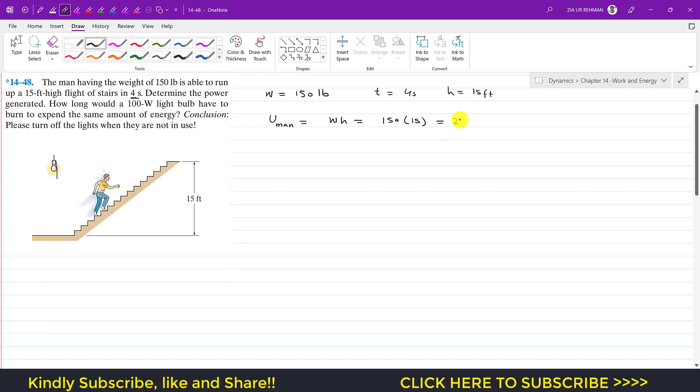So this is 2250 pound-feet, this is the work done by the man. And now the power that is generated by the man, let's say this is power by man, that will be equal to u of man divided by t...